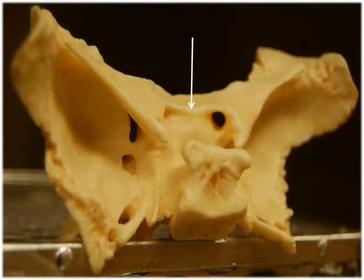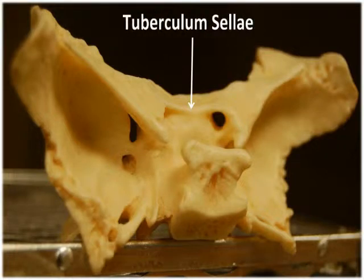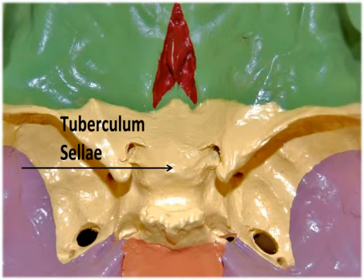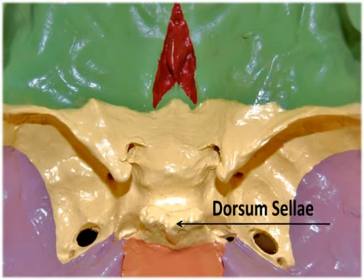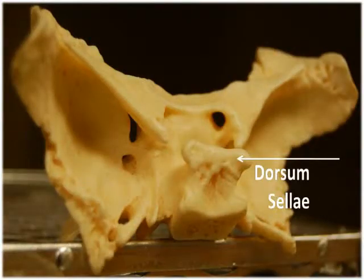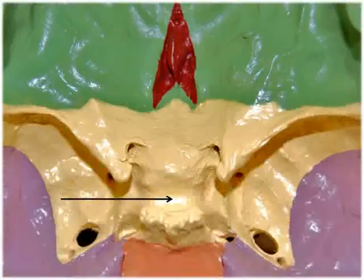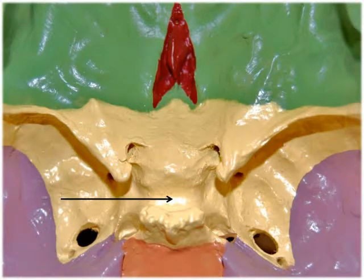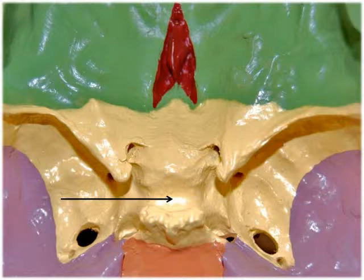The sella turcica resembles a Turkish saddle which has a backrest. The tuberculum sellae is the anterior bumpy ridge on the sella turcica that forms the horn of the saddle. The dorsum sellae is the posterior part of the sella turcica that forms the backrest. The seat-like depression of the saddle is the hypophysial fossa, located in the middle of the sella turcica. The rider sitting in this saddle is none other than the pituitary gland, with the hypophysial fossa containing and protecting this very important gland at the base of the brain.